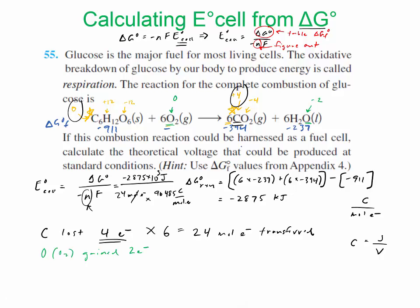So the mole of electron cancels, and then in my answer, I need to write it down here, I ran out of space. I should get 1.24 joules per coulomb. So my units are joules per coulomb, which is 1.24 volts, and that's my final answer.